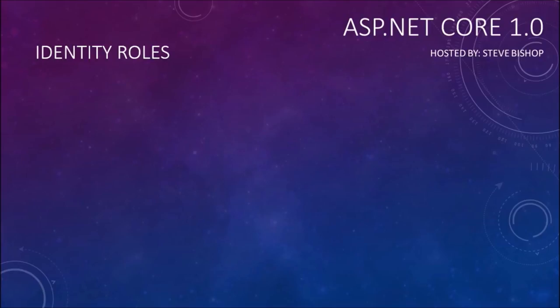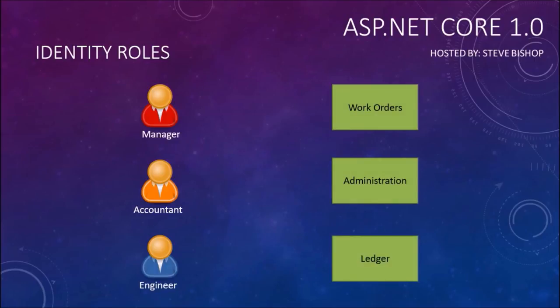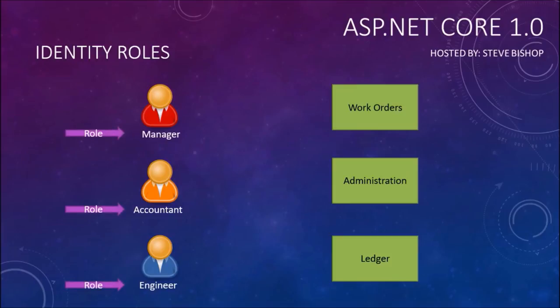We have a variety of different types of users that may be accessing our application and we also have several different sections of our application that we'll probably want our users to have access to. But depending upon what kind of user it is, we may want to restrict which sections of the application that user should have access to. One of the ways we can do this is by assigning each one of our users a role.